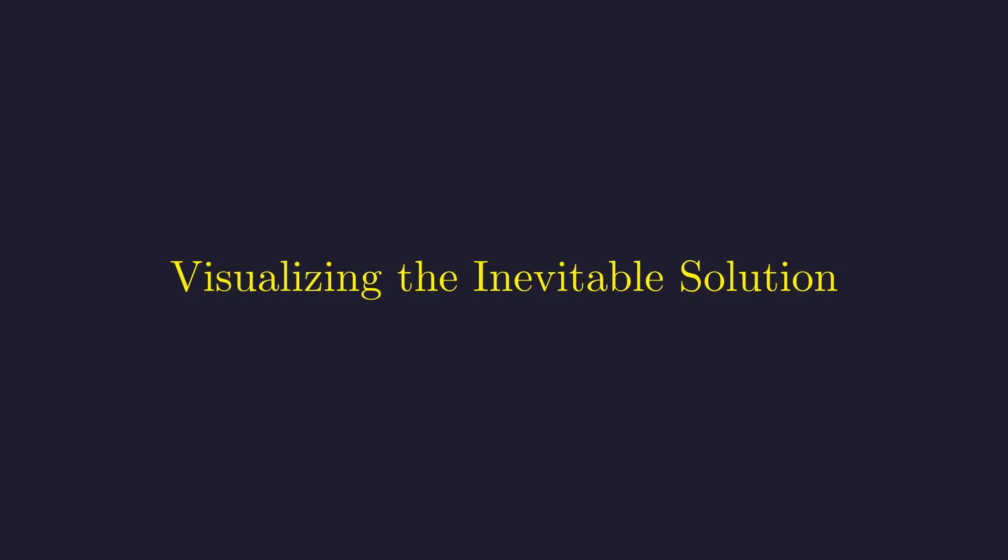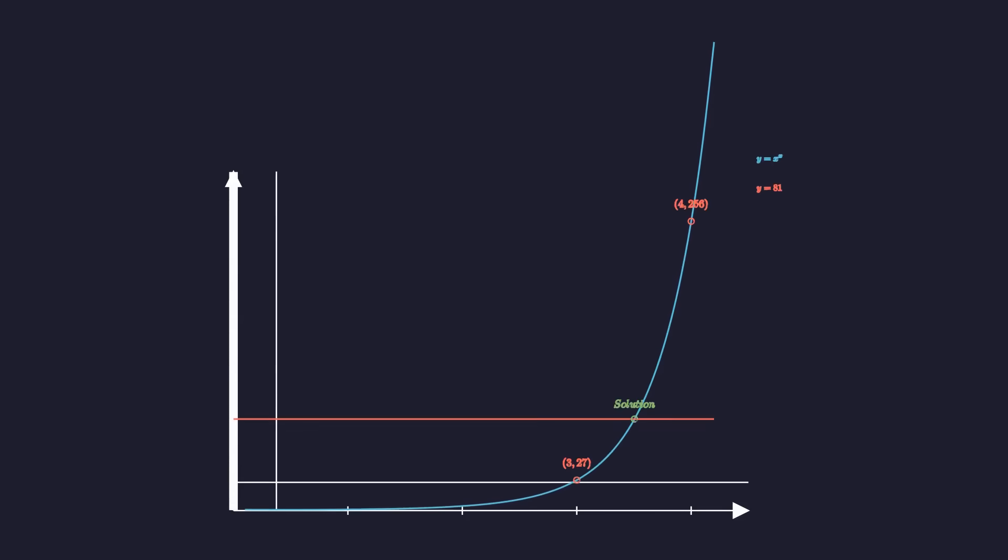To confirm the existence and uniqueness of this solution, we can visualize the problem graphically. Here we plot two functions: u equals x to the power of x and the horizontal line y equals 81. The x coordinate of their intersection point represents the solution to our equation.